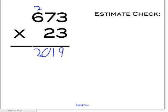And then 2 times 3 equals 6. 2 times 7 equals 14, so you put the 4 here and carry the 1 up here. And then 2 times 6 equals 12, plus 1 equals 13.